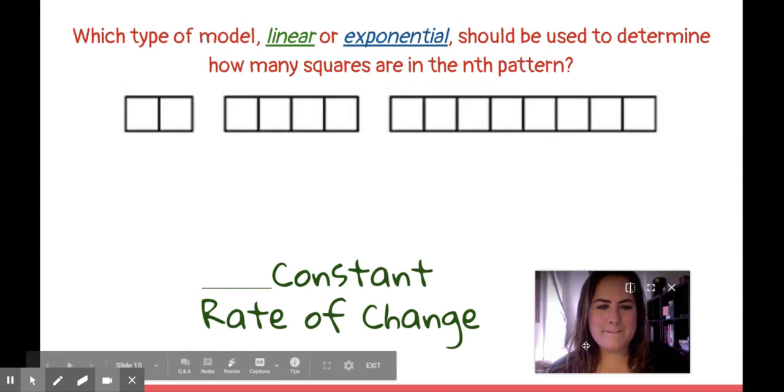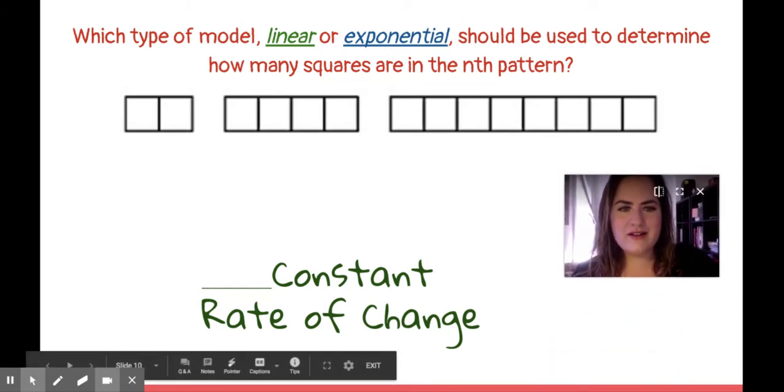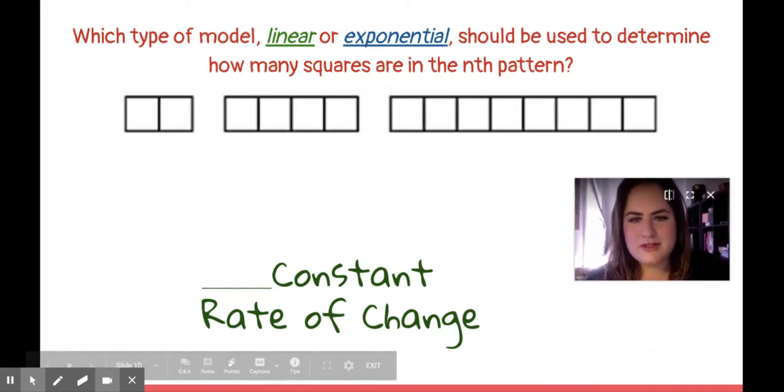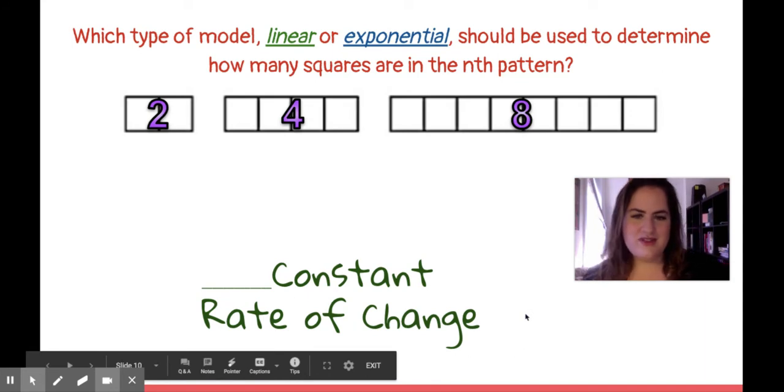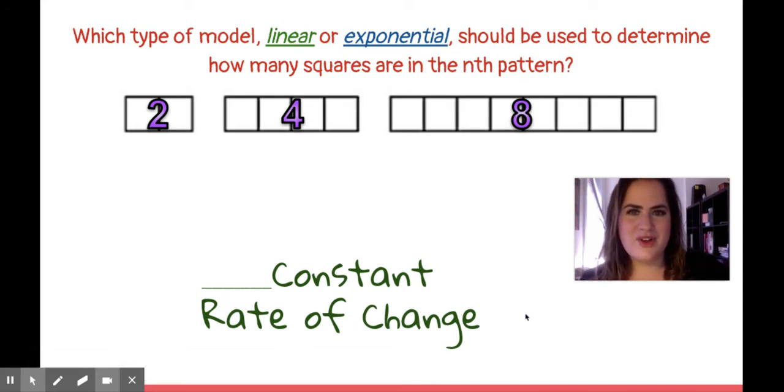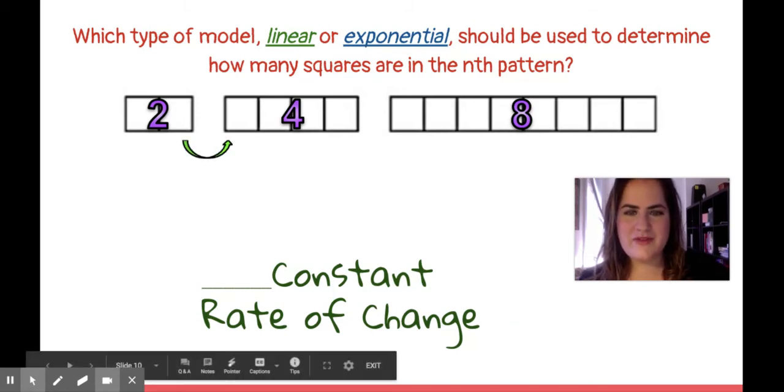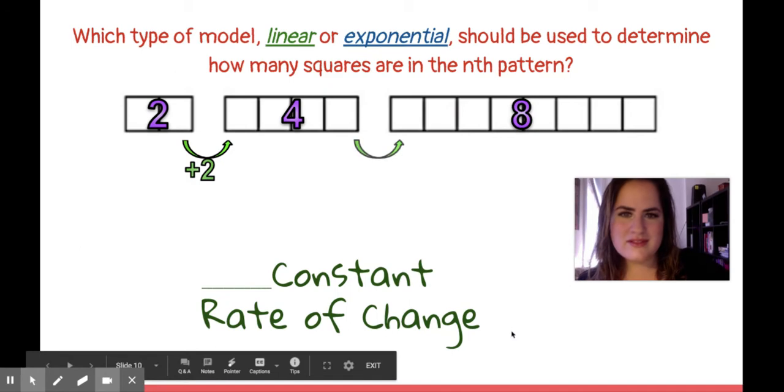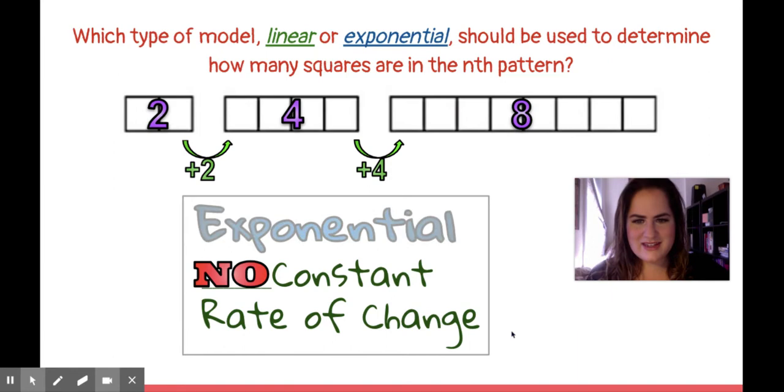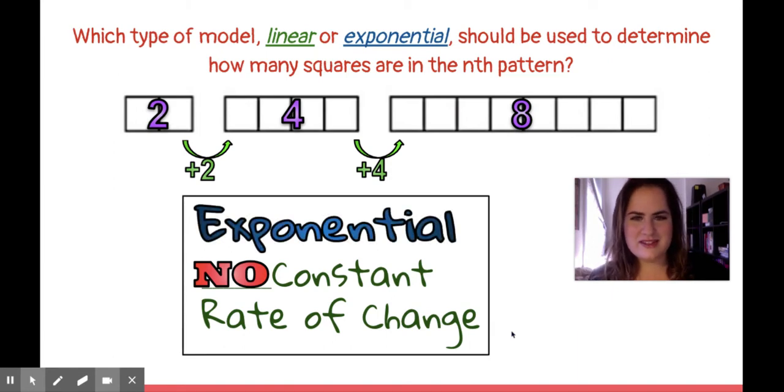Let's do another one. Similar kind of question. Linear or exponential? I don't see any numbers here, but I can count squares. We got 2 squares, then 4 squares, then 8 squares. So what do we think? Linear or exponential? Let's go over it. My rate of change can be found by figuring out how to get from one set of squares to the next. So to get from 2 to 4, I add 2. To get from 4 to 8, I add 4. So there's no constant rate of change here. That's exponential. If you said exponential, you're correct.